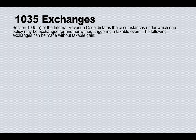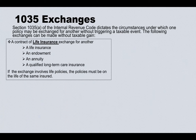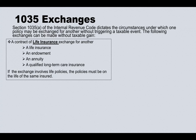Let's look at what type of policy can be exchanged for what. First, a life insurance contract can be exchanged to another life insurance policy, to an endowment, to an annuity, or to a qualified long-term care insurance policy. If the exchange involves life insurance policies, the policy must be on the life of the same insured — the insured must be the same person.